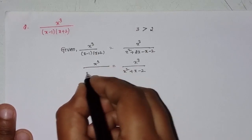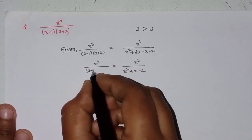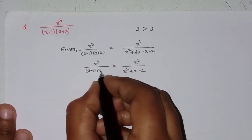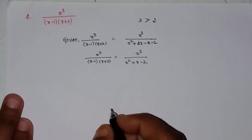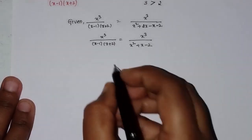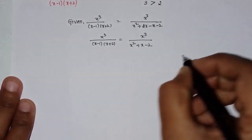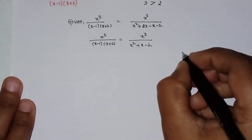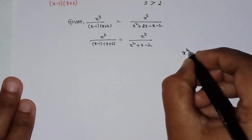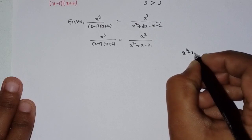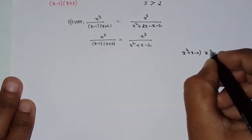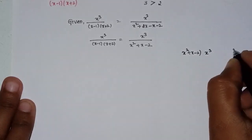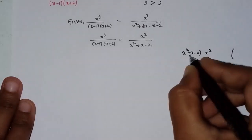Given: x cube by x minus 1 into x plus 2. Expanding the denominator: x into x plus 2 minus 1 into x plus 2 gives x squared plus x minus 2. So we have x cube divided by x squared plus x minus 2. I am going to divide.